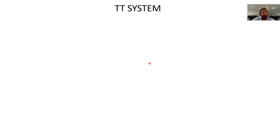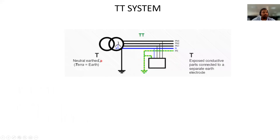The first type is the TT system. In the TT system, the supply-side neutral is earthed and the load-side equipment protective conductor is also earthed independently. Both the supply side and the load side have their own separate earth connections.